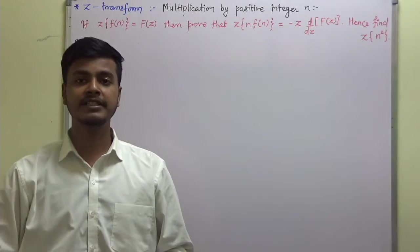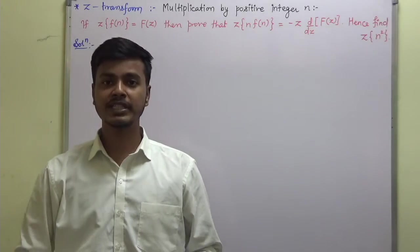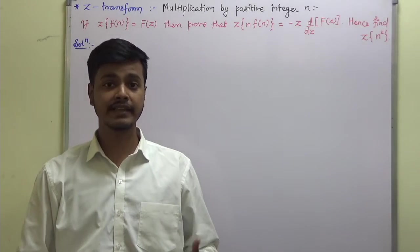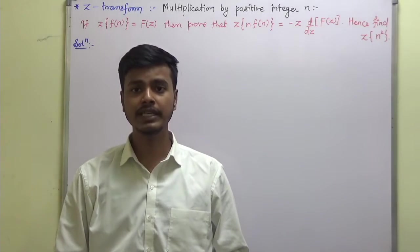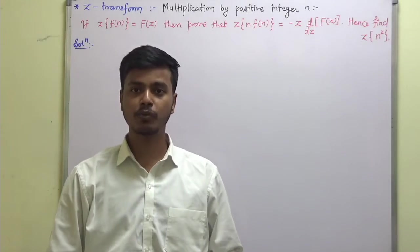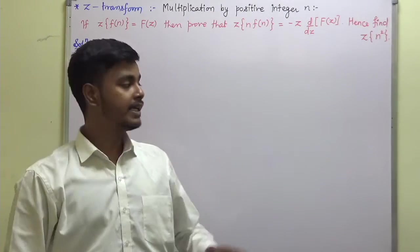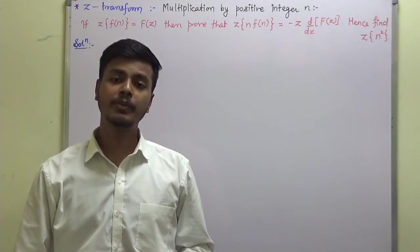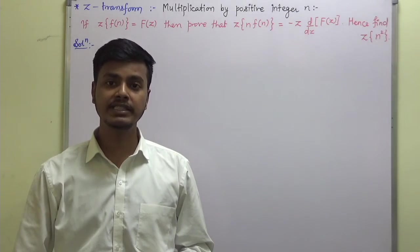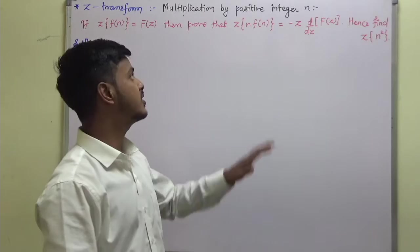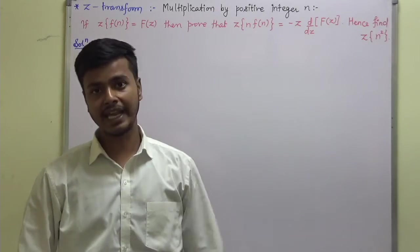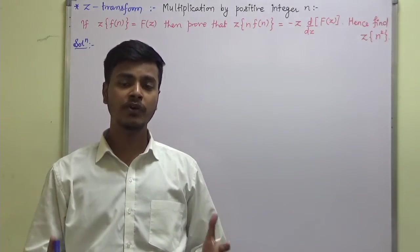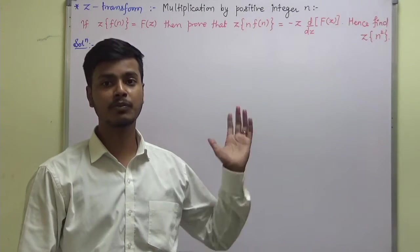Hello and welcome to this learning video. Till now we have seen two properties on Z transform: one is the linearity property and the second one is the change of scale or damping rule property. Here in this learning video we are going to talk about the third property on Z transform, that is multiplication by positive integer n property.